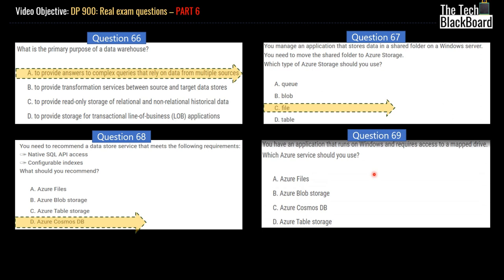Let's move to our question number 69. Question number 69 is, you have an application that runs on Windows and requires access to a mapped drive. Which Azure service should you use? Is it Azure Files, Azure Blob Storage, Azure Cosmos DB, or Azure Table Storage? If you have been paying attention, then you might notice that question number 69 is very close to question number 67. In this question, it asks that you have an application which requires access to a mapped drive. While describing 67, I told you that it's the File that provides you mapping capabilities. Thus, we can rule out the option Azure Blob Storage, Cosmos, or Table Storage. So the correct answer for this one is Azure Files.